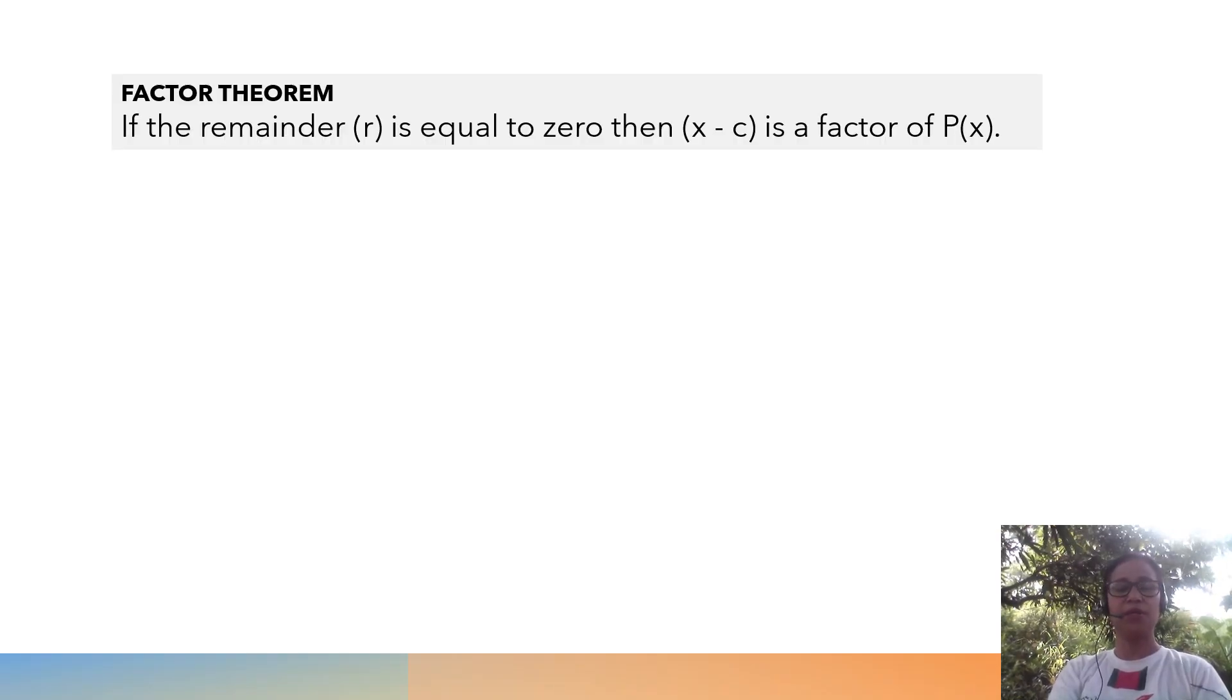The Factor Theorem states that if the remainder r is equal to 0, then the divisor x minus c is a factor of the polynomial P(x). Now, let's apply Factor Theorem in our first example.